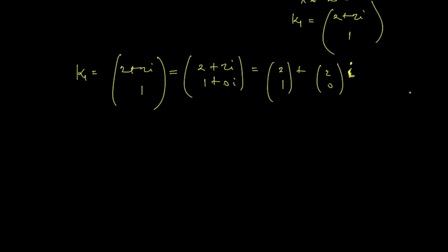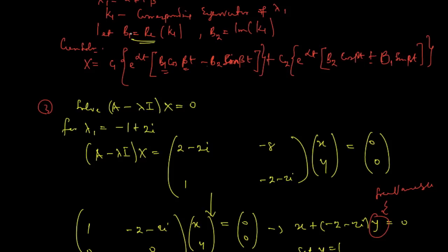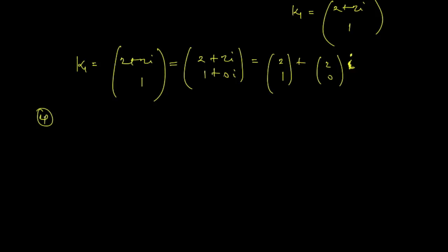Now, having gotten this, we said, let b1 be the real part of k1 and b2 be the imaginary part of k1. So that's step, I guess that should be step 4. So b1 is the real part, the real part of k1 is the one that does not have any i attached to it, which is this one here. So that's going to be 2, 1, and then b2, which is the imaginary part, is the coefficient of the imaginary number itself, that's 2, 0.